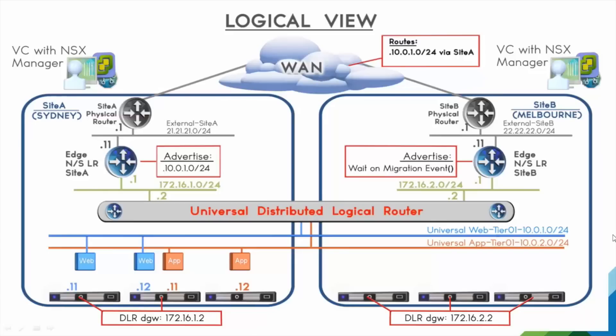This is the network topology for the lab demonstration — the same as the previous slide. The key focus is those red boxes, which are central to the multi-site ingress techniques. On site A, the red box derives the slash 24 prefix from the NSX edge and advertises it to the WAN border router, so traffic goes via site A. On the right hand side, we're waiting on a migration event. Once an application arrives at the secondary data center, a policy will be invoked and a more specific prefix — a slash 32 — will be advertised to attract traffic to that respective data center.